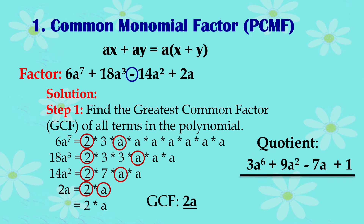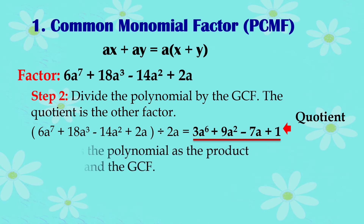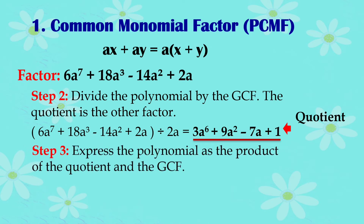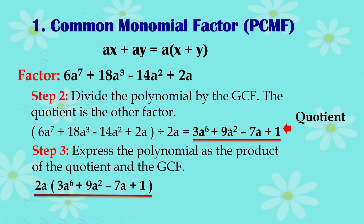Once you have the quotient and the GCF, you can write them as factors. Express the polynomial as the product of the quotient and the GCF — just write them as a product. The factor form of 6a to the 7th plus 18a cubed minus 14a squared plus 2a is 2a times the quantity 3a to the 6th plus 9a squared minus 7a plus 1.